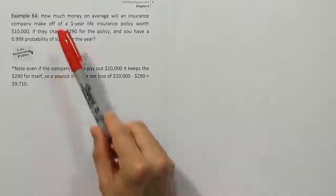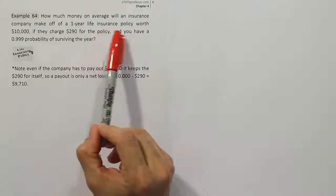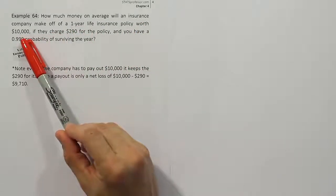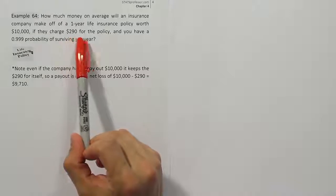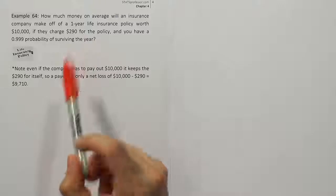Example 64. How much money on average will an insurance company make off a one-year life insurance policy worth $10,000 if they charge $290 for the policy and you have a 99.9% probability of surviving the year?